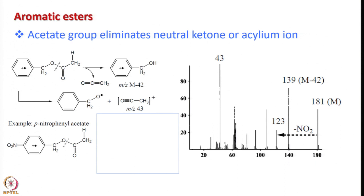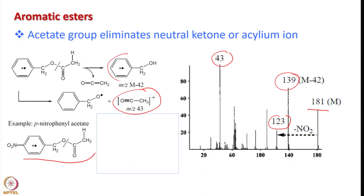Now let us look into aromatic esters. Acetate groups are readily eliminated; neutral ketones and acylium ions are often observed. A typical example is nitrophenyl acetate, with mass 181. First we see loss of NO2, giving M−42 at 139, then a peak at 123, and another at 111. This is the typical fragmentation of aromatic esters, where the initial cleavage site is the O-C bond next to the carbonyl group.